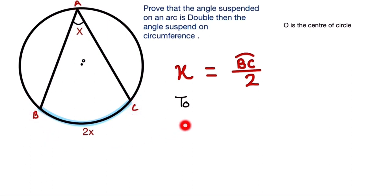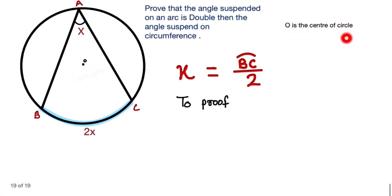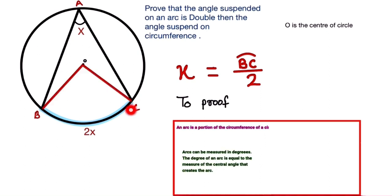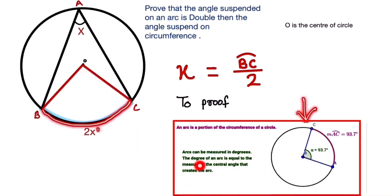To prove this, we have points A, B, and C on the circle, and point O is the center of the circle. For the proof, we join BO and OC.